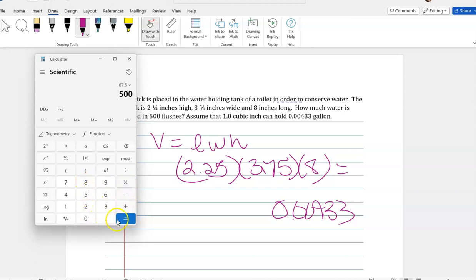Okay, so I've saved 33,750 cubic inches, but I need to know that in gallons. So I'm going to times it by 0.00433, and I get 146.13 gallons.